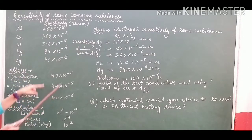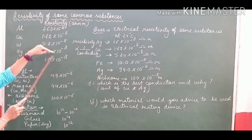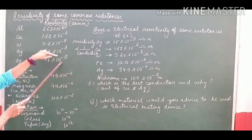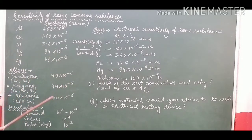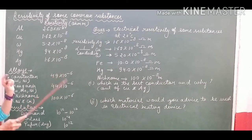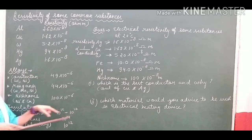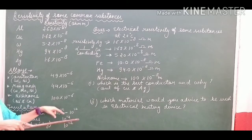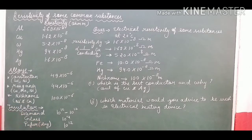In the case of alloys you can see the exponent is −6. That means their resistivity value is higher — minus 8 is a smaller digit and minus 6 is a bigger digit. So their conductivity will be lesser. For insulators the resistivity value is positive and very large, so they resist current flow most strongly.